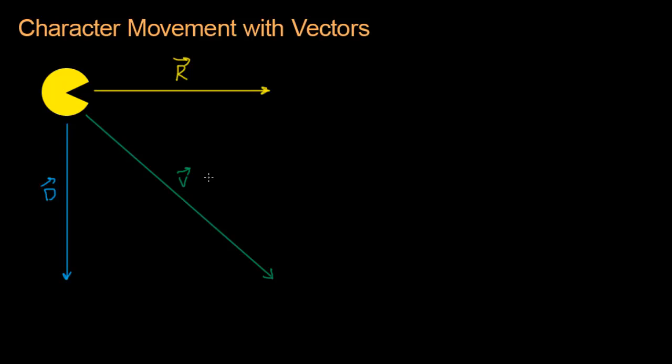Again, give him a break. He was made in 1980. 23 years ago. But we have the technology. We can make him stronger and better. And we can make it so that he moves along this diagonal. And it's actually really easy. We can do it by adding vectors. Let's see how that's done.